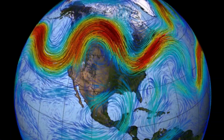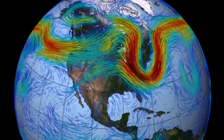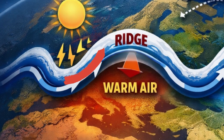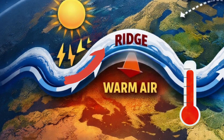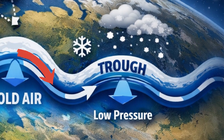Jet streams do not flow in straight lines. Instead, they form large atmospheric waves known as Rossby waves. These waves create ridges and troughs in the jet stream. When the jet stream bends northward, it forms a ridge. Ridges tend to bring warmer and often drier conditions underneath, because they allow warm air to move poleward. When the jet stream dips southward, it forms a trough. Troughs tend to bring colder and more unsettled weather, because they allow cold air from higher latitudes to move south.